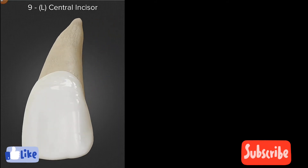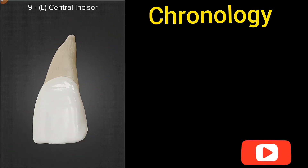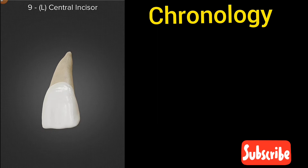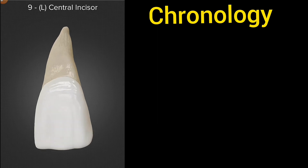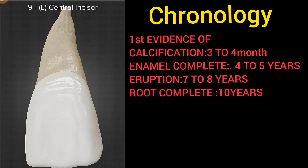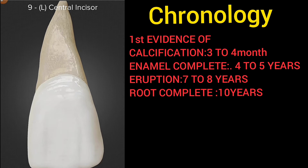Let's see the chronology of this central incisor. The first evidence of calcification starts at three to four months of intrauterine life, the enamel is completed at four to five years, and it erupts at around seven to eight years.